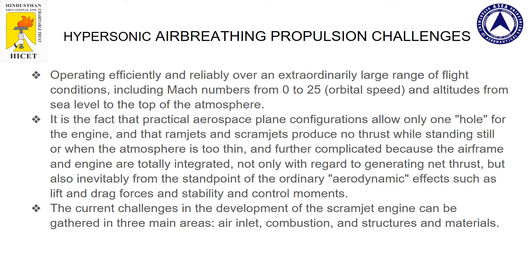Operating efficiently and reliably over an extraordinarily large range of flight conditions — including Mach numbers from 0 to 25 and altitudes from sea level to the top of the atmosphere — is challenging because a scramjet engine can be used as a missile and also as a first stage in a rocket. It is also a fact that practical aerospace plane configurations allow only one hole for the engine, and that ramjet and scramjet produce no thrust while standing still or when the atmosphere is too thin, resulting in zero thrust. This is further complicated because the airframe and engine are totally integrated, not only with regard to generating net thrust but also from the standpoint of aerodynamic effects such as lift and drag forces and stability and control moments.